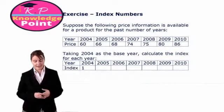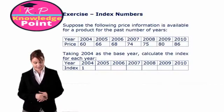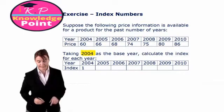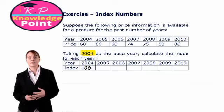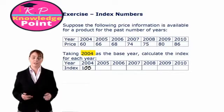We have the following price information available for our product from the years 2004 to 2010. Now we are asked, taking 2004 as the base year, calculate the index for each year. If 2004 is our base year, then 2004 will have the index 100. Our base year always has index number 100.